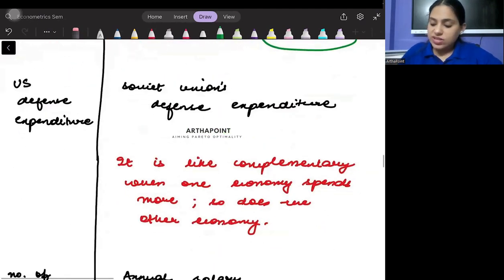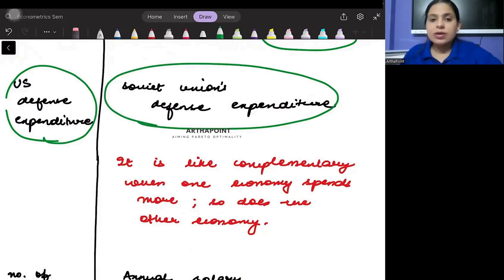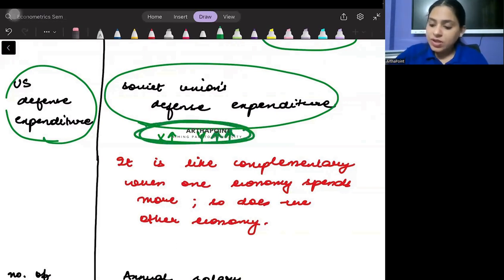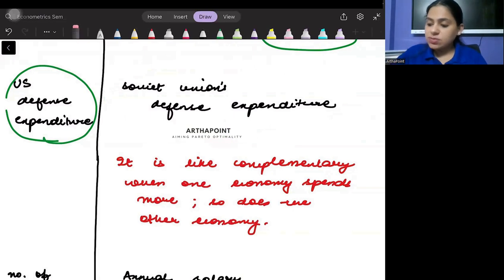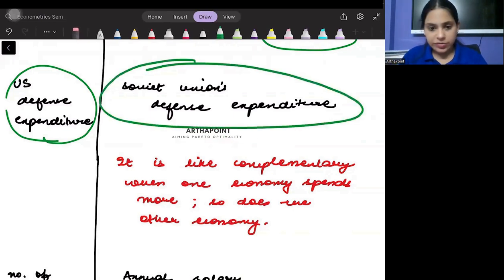US defense expenditure and Soviet Union's defense expenditure. Defense expenditures they are like in a way complementary goods. Whenever suppose there are two countries x and y, if x will spend more on defense it is making its country more powerful. So in that case y also wants to spend more on defense to make its country more powerful. So there is a positive relationship between the defense expenditure of the two countries.